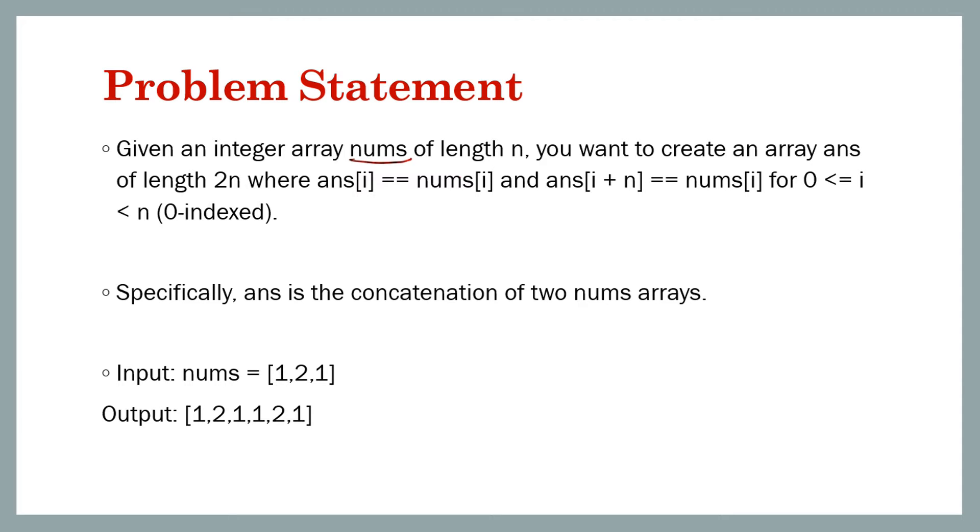The array name is nums, its length is n, and you want to create a resulting array called ans with length 2n. How is it formed? In the result, its ith element is nums[i], and i plus n.